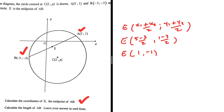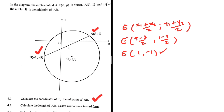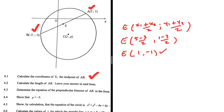So we have the coordinates of E, the midpoint of AB, which is (1, -1). Now let's take a look at 4.2. This was 4.1.